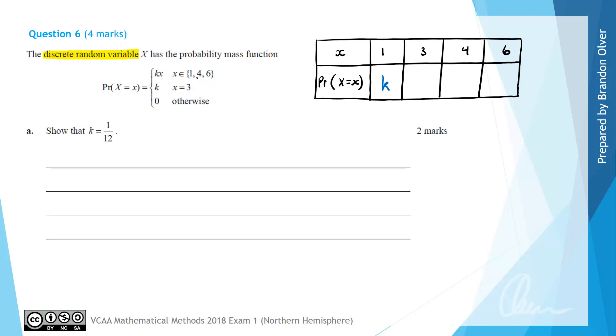If x equals 4, we apply the same rule. So it's k times 4, which is 4k. If x equals 6, we have 6 times k is 6k. And the last value of x, which is 3, just gives a value of k as well.